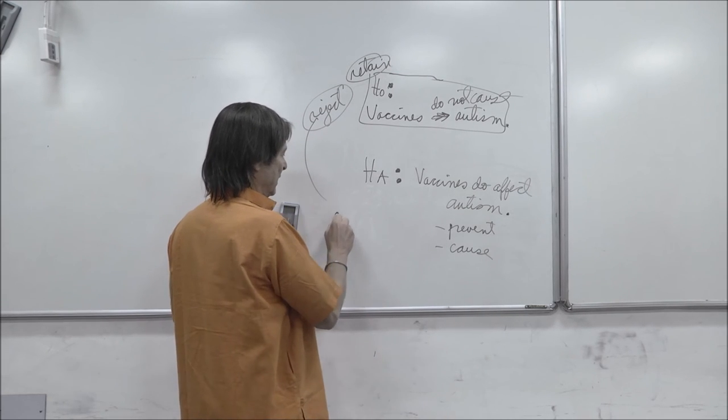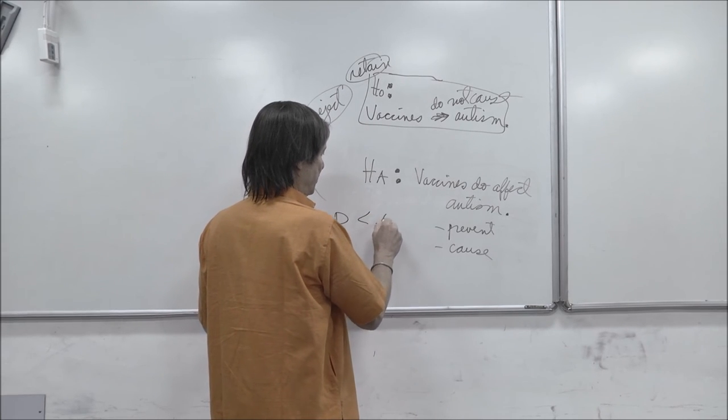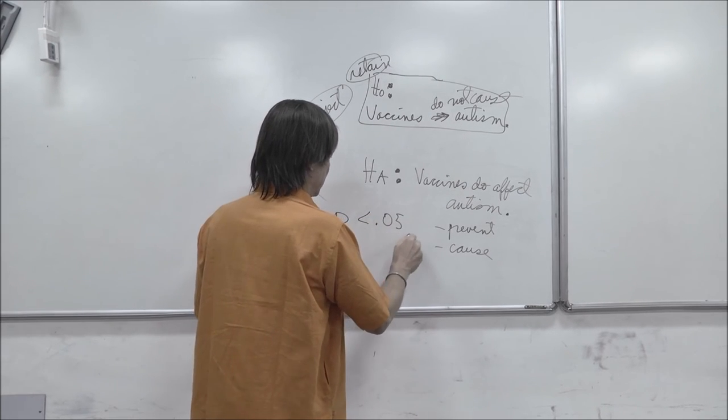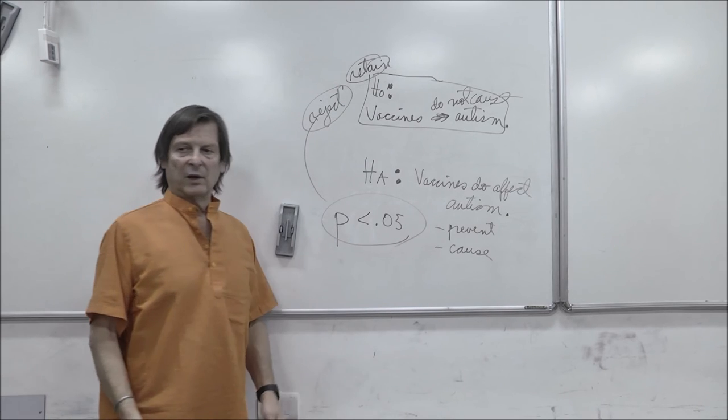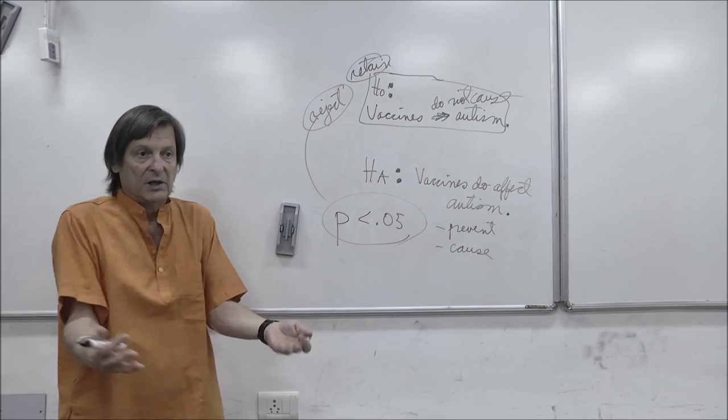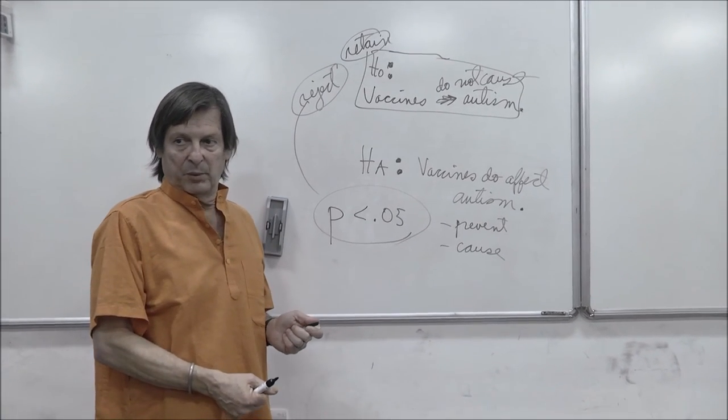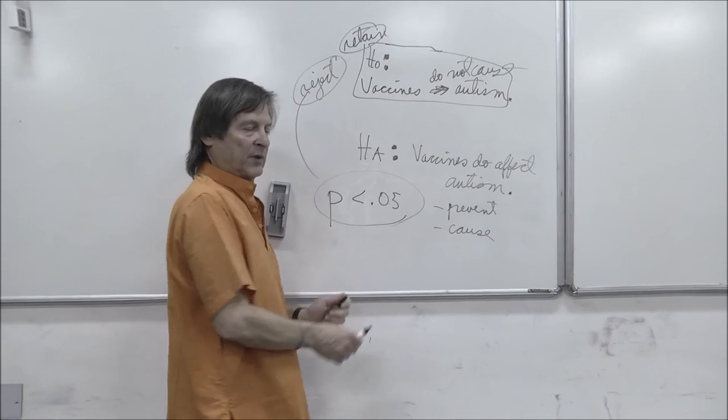And the probability I'm wrong is less than 5%. And we'll do it as a decimal form, 0.05. And that's all we can do in statistics. So what I'm going to teach you in this class is, how do they come up with this probability, and why does it have to be 0.05?